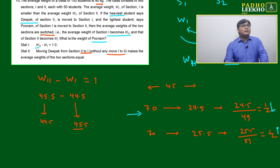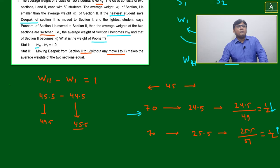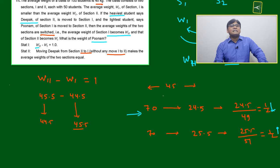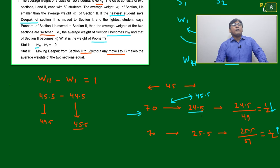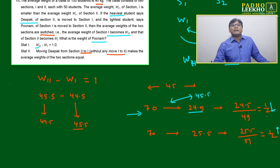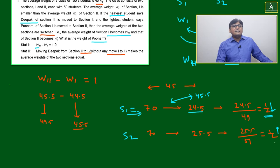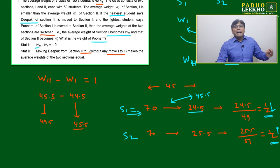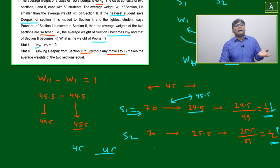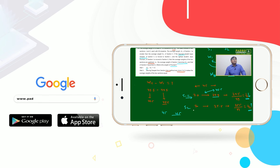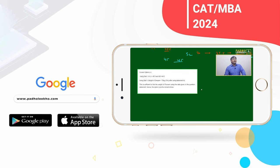When Deepak moves out of Section 2, Section 1's average decreases and Section 2's average increases. The difference between Deepak's weight (70) and Section 1's average (45.5) is 24.5, spread over 49 students — a decrease of 0.5. So Section 1 goes from 45.5 to 45 and Section 2 goes from 44.5 to 45; both become equal. This confirms Deepak's weight is 70, and from that we can find Poonam's weight.